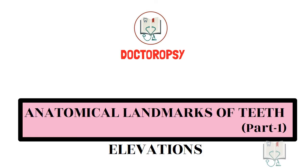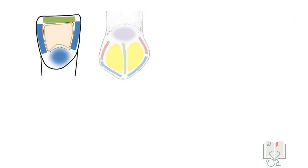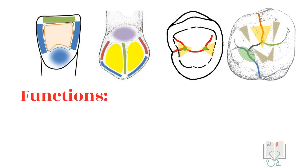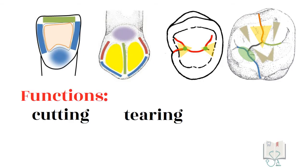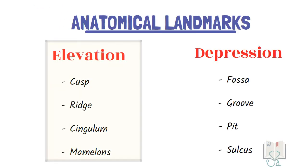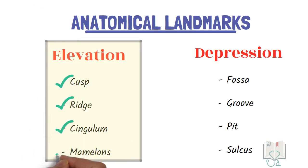Anatomical landmarks are features on the surface of the tooth which are either elevations or depressions. These landmarks help the tooth in performing their functions and also in their identification. Here we will be discussing the landmarks showing only convexity or elevation.